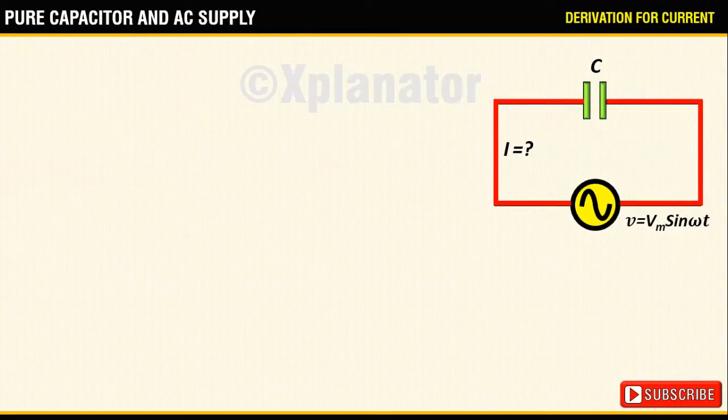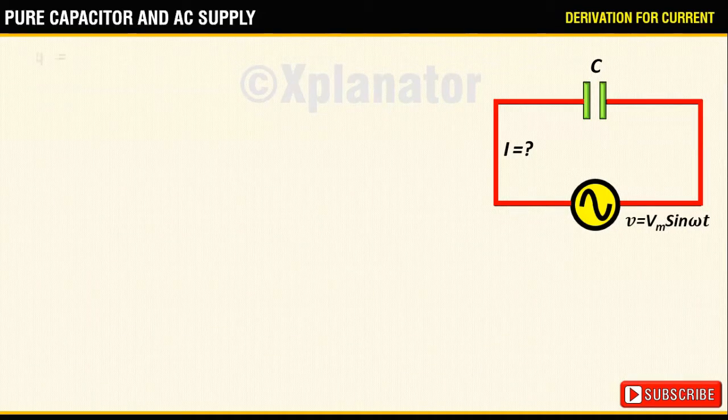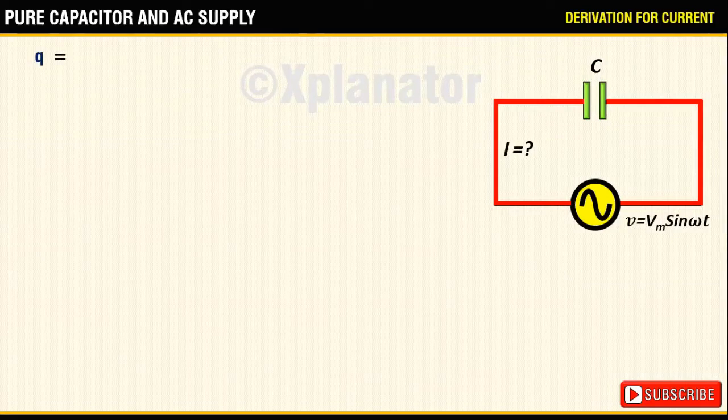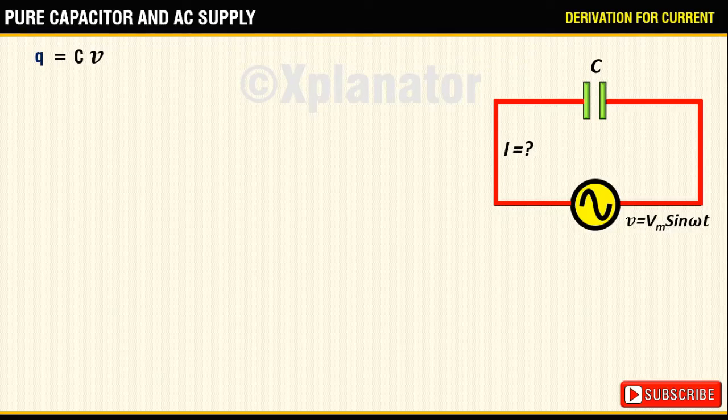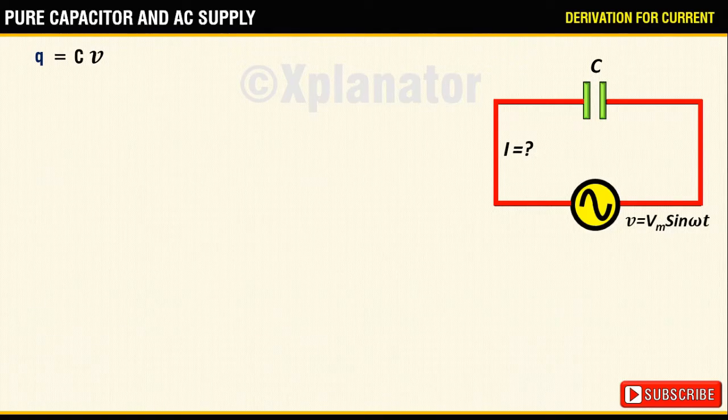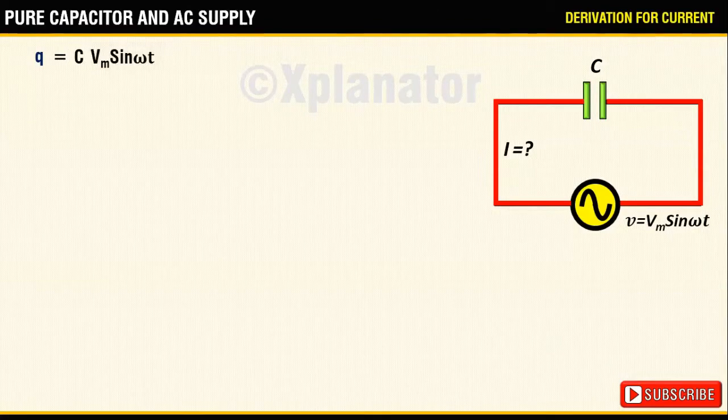Now the current is defined as flow of charges. With respect to a capacitor, we define charge Q as a product of capacitance and applied voltage. In the form of an expression, it can be written as Q equals C into Vm sine of omega t.